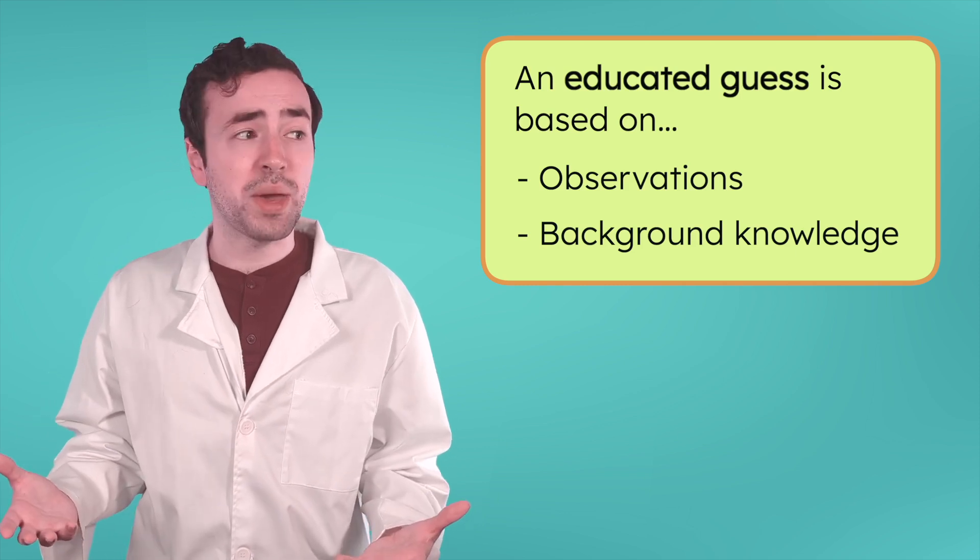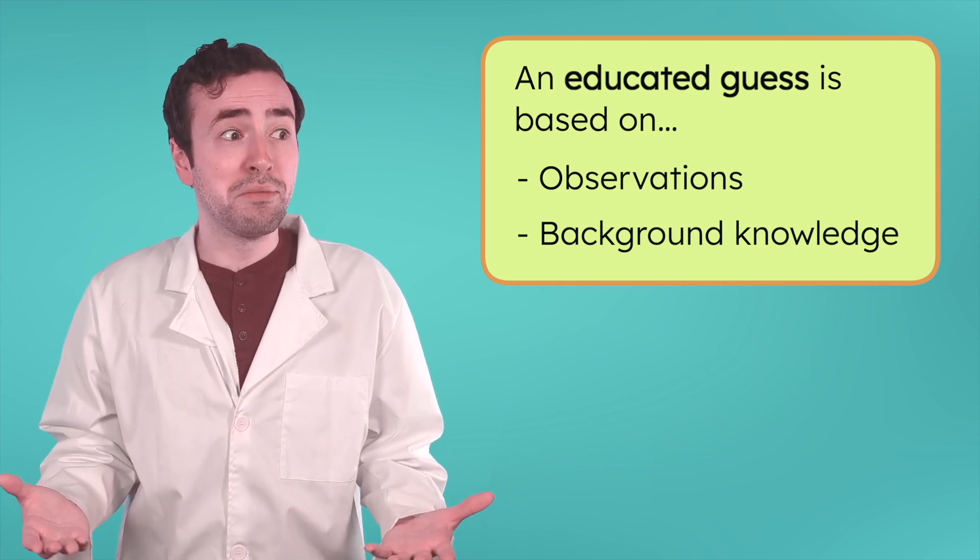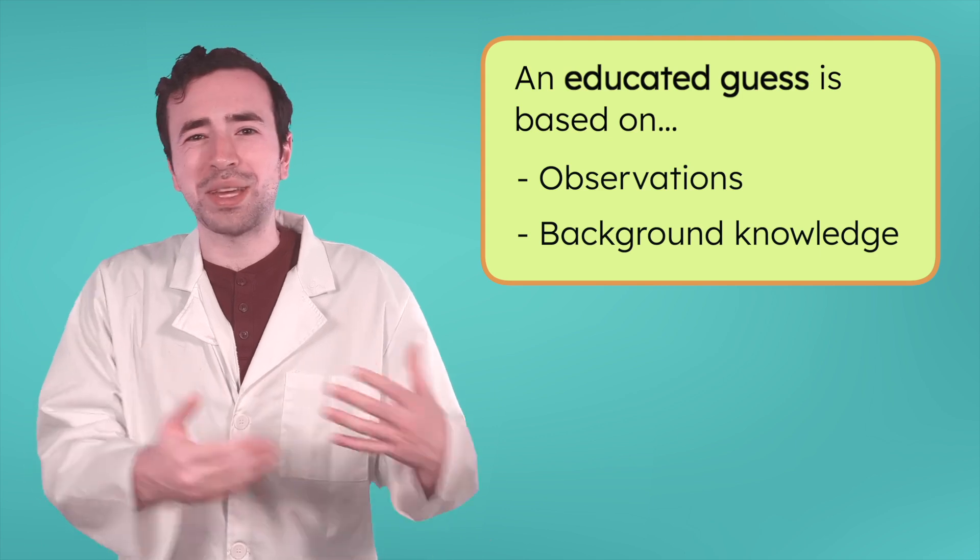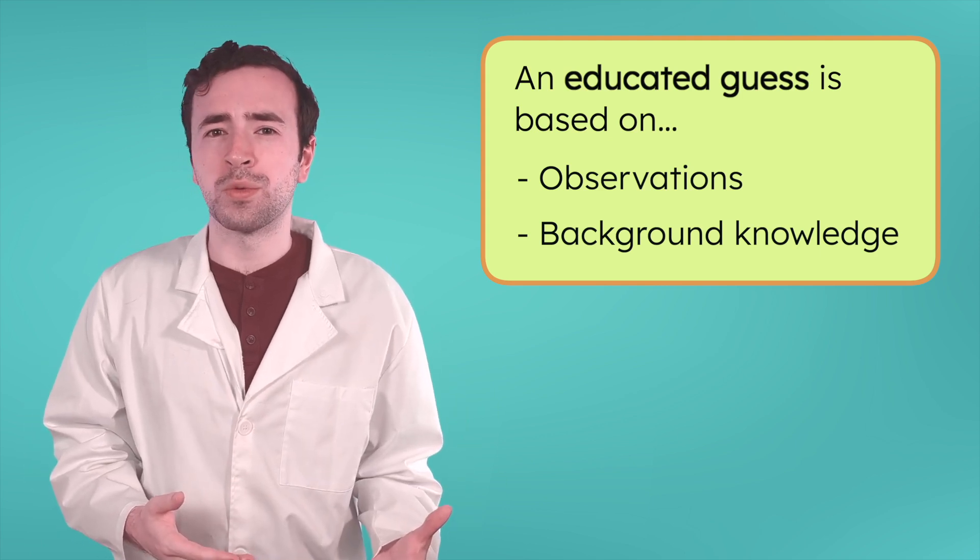Is it possible that bandits stole the puddle? Maybe, but it's not based on what we've observed, or what we know about how the world works. So, what clues can we gather here to build our hypothesis? There was a puddle on the ground this morning, and now it's gone. It's also scorching hot outside. Looks like we've got two key pieces of evidence, a missing puddle and a blazing sun.